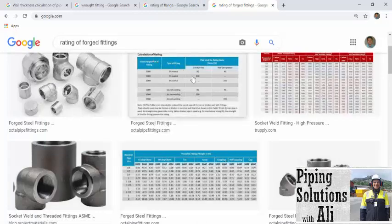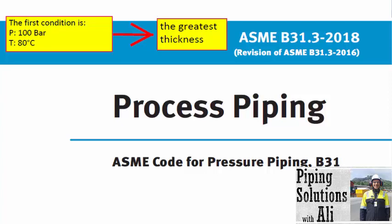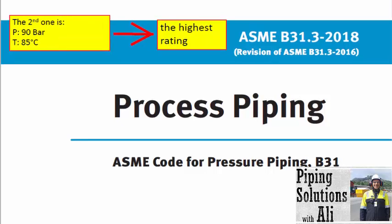We will discuss the pressure design of piping components in the next episode. Let's assume that we want to determine the design pressure of a pipe. We will calculate the wall thickness based on the formula presented by ASME B31.3. If the first condition — pressure equal to 100 bar and temperature equal to 80 degrees Celsius — results in greater wall thickness, the design pressure shall not be less than 100 bar; it could be 100 bar or greater. If we have a flange instead of a pipe, we follow the same instruction. If the second condition — 90 bar and 85 degrees Celsius — results in a higher rating, the design pressure of that component shall not be less than 90 bar.